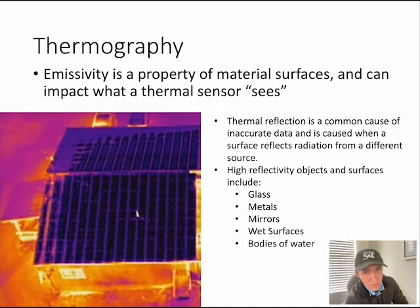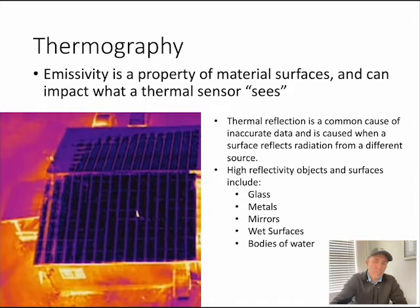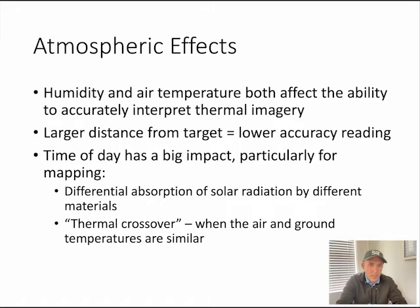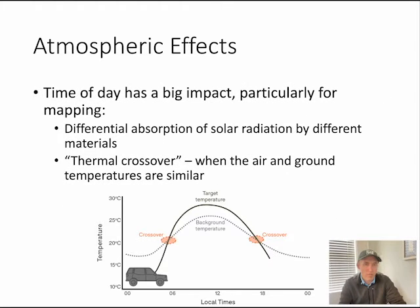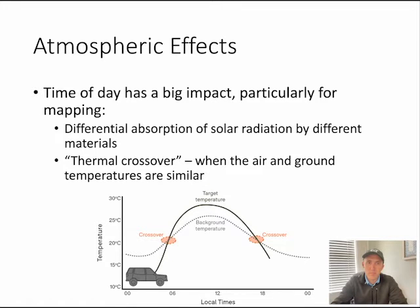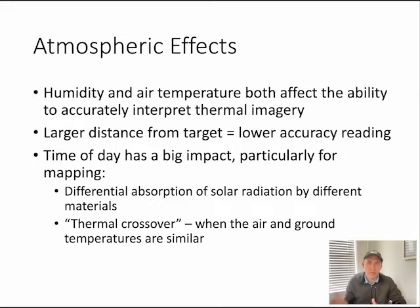Thermal reflection is a common cause of inaccurate data. High-reflectivity surfaces include glass, metal, mirrors, shiny objects, and bodies of water — these are things to watch out for. Humidity and air temperature (atmospheric effects) can also impact your ability to get a correct temperature reading. There is something called a thermal crossover, where the target temperature and background temperature become the same, making accurate imaging very difficult. More humid, higher-temperature conditions will also affect the propagation of infrared waves and your ability to properly image.